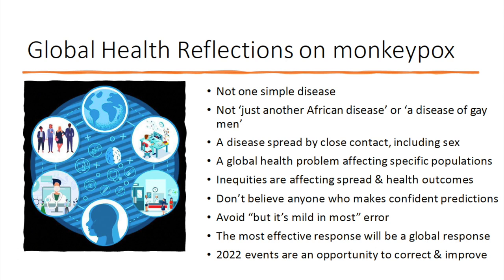The most effective response for a global health problem is going to be a global response. It's self-defeating if we just deal with the problem in our own country, because it will come back and we'll get more imported infections in the future. If altruism alone isn't a sufficient cause to help other countries, then protecting your own population by addressing this as a global health problem seems sensible.